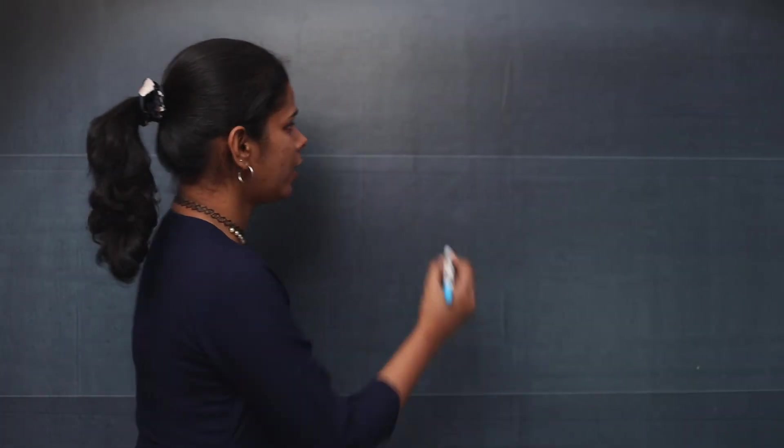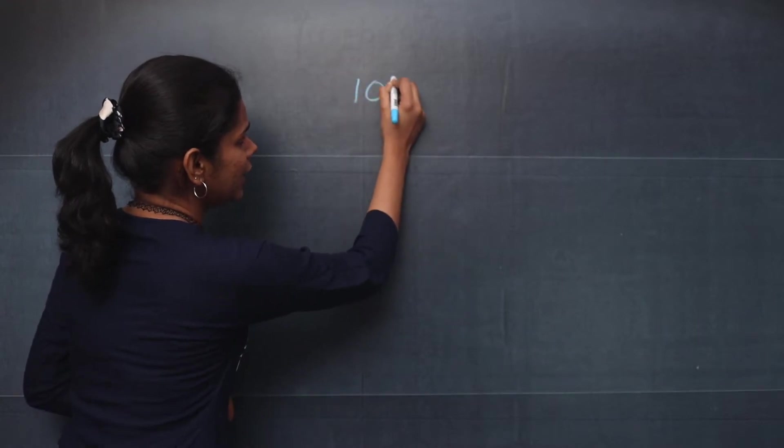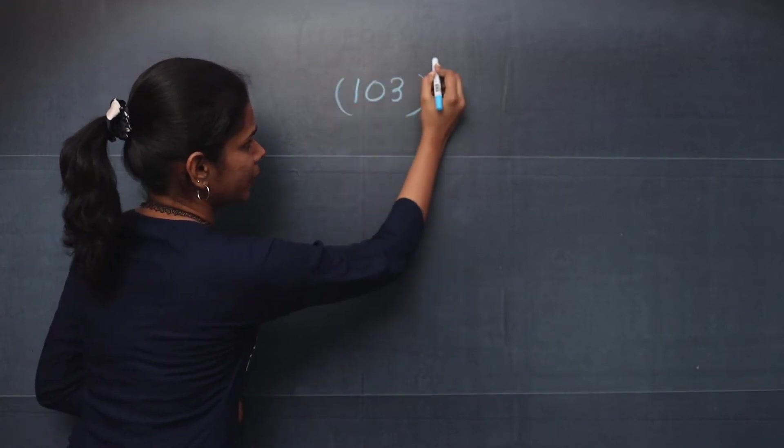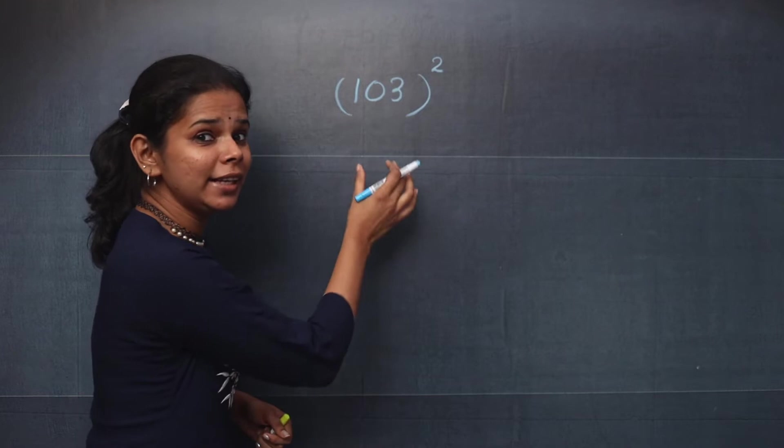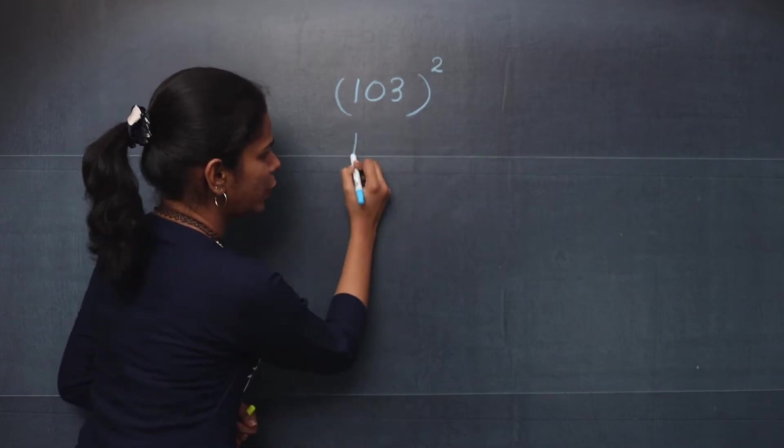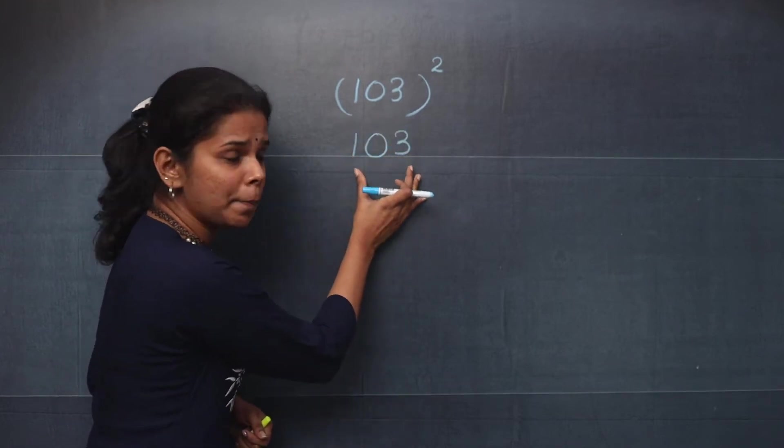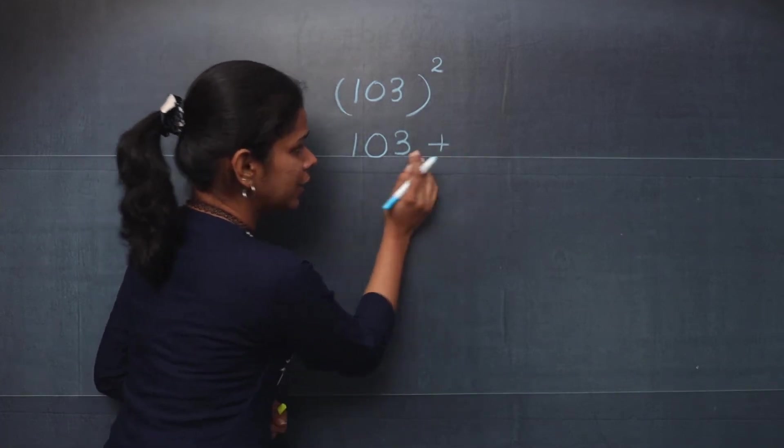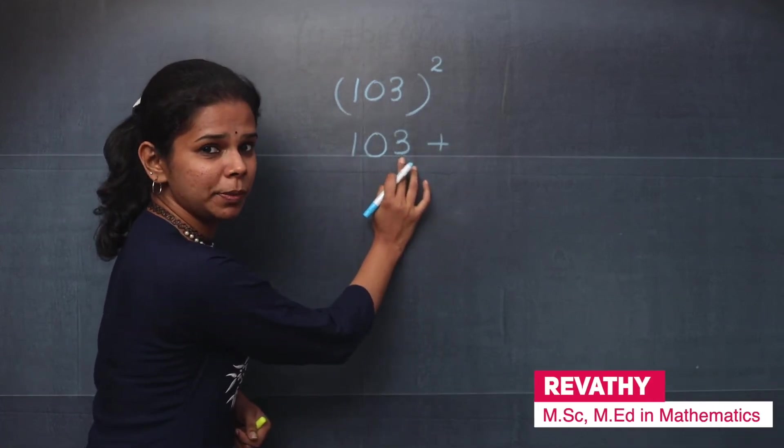Let's start with 103, the whole square. First, you will write the number as it is, that is you will write 103. And to this number, you will add the digit in the ones place.